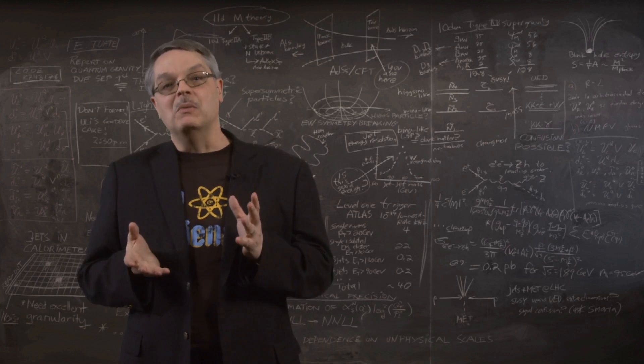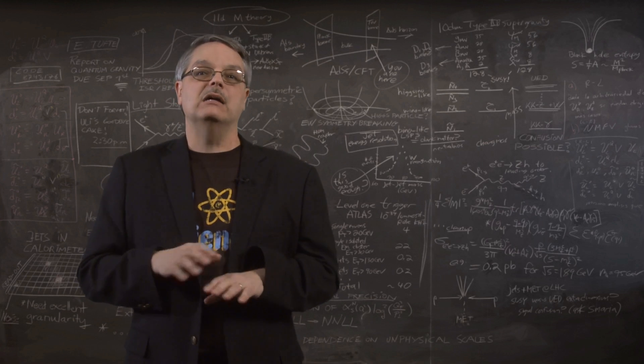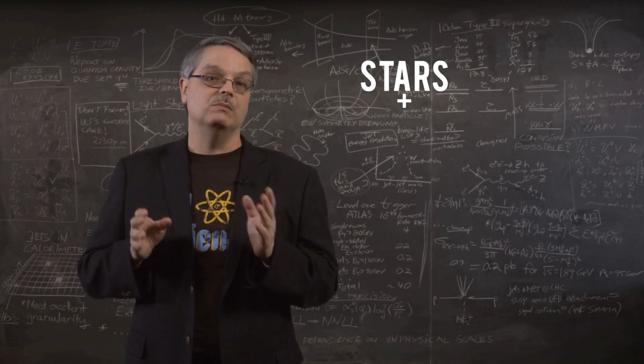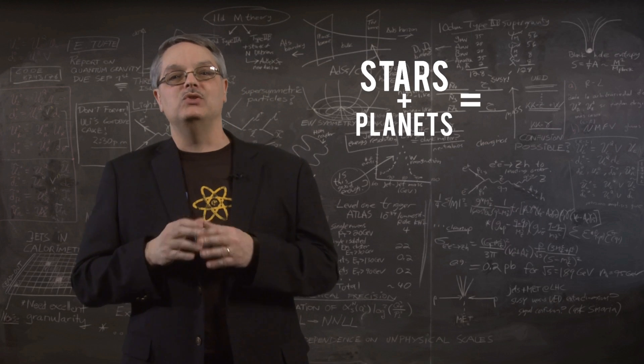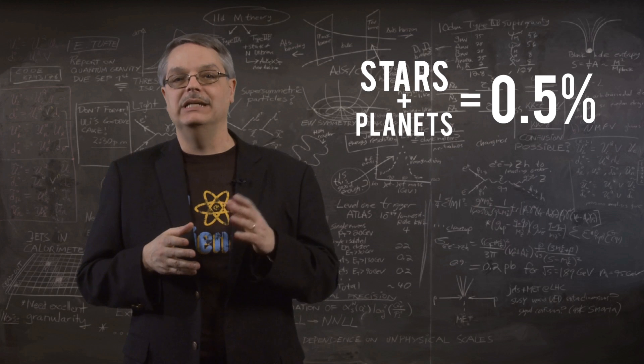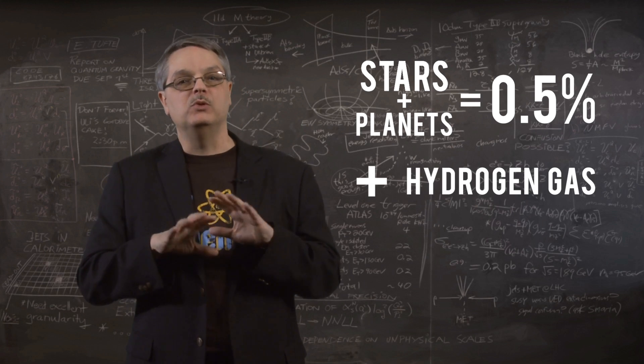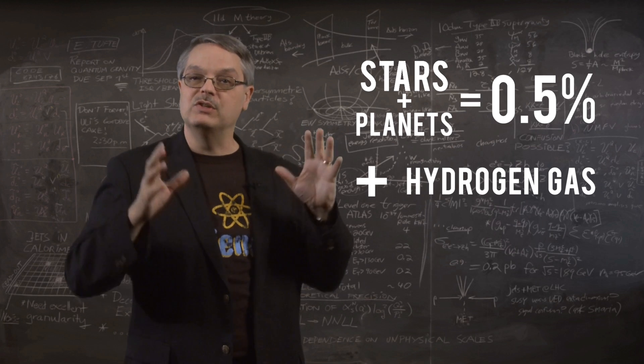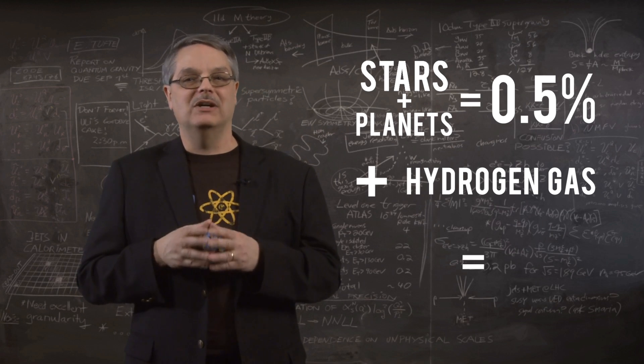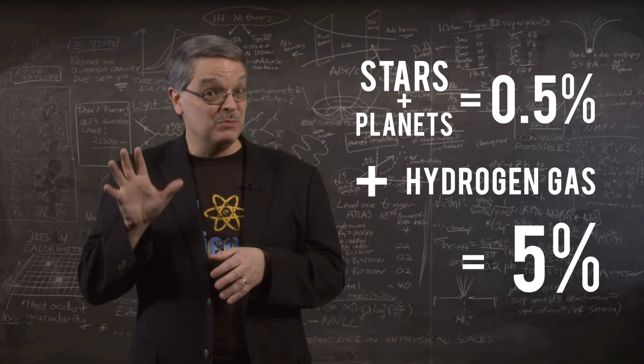However, I have some humbling news for you. If you add up all of the matter tied up in stars and planets, it only amounts to half a percent of the matter and energy in the universe. Even if you include the hydrogen gas between the stars and galaxies that is invisible to ordinary light, you still have only about five percent. Five percent.